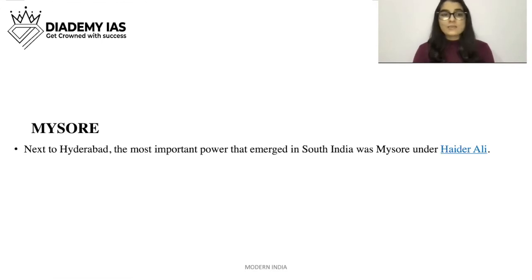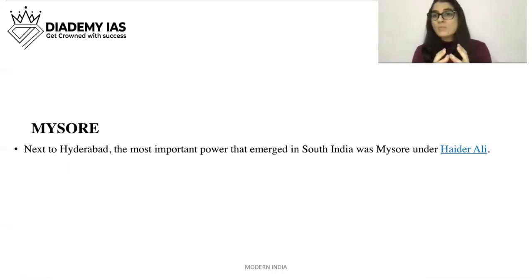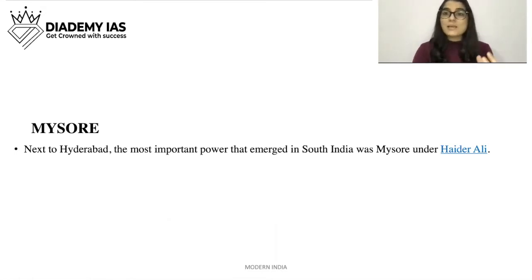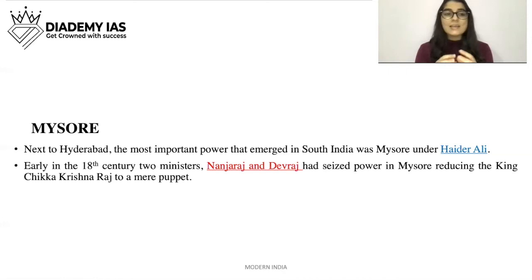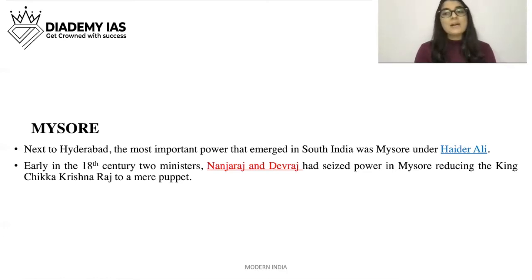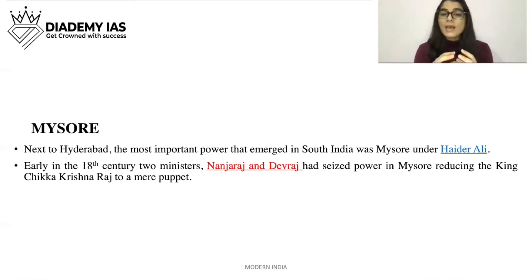Next to Hyderabad, the most important power that emerged in South India was Mysore under Hyder Ali. You will hear the names Hyder Ali and Tipu Sultan — these are the rulers of Mysore. Early in the 18th century, two ministers named Nanj Raj and Dev Raj had seized power in Mysore, reducing the king Chika Krishna Raja to a mere puppet.